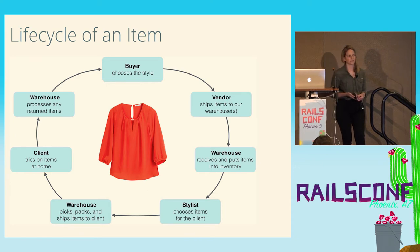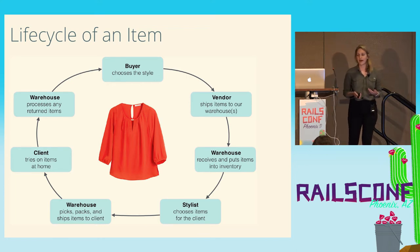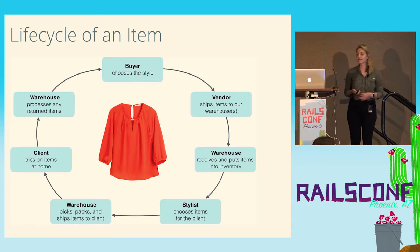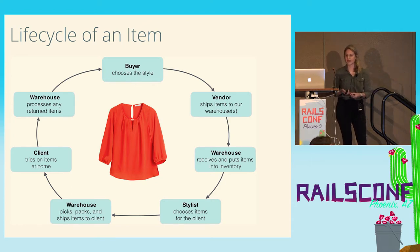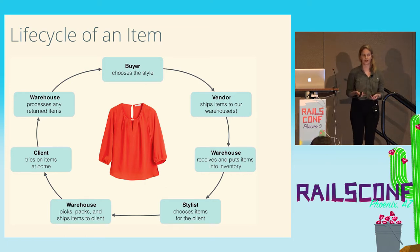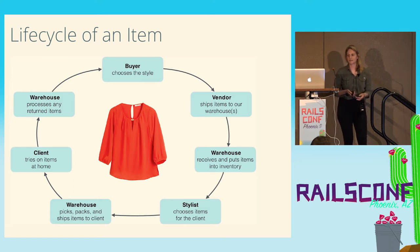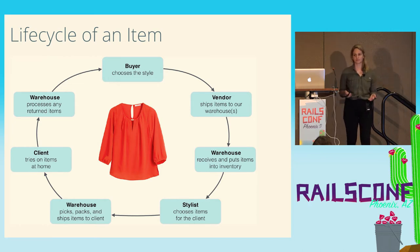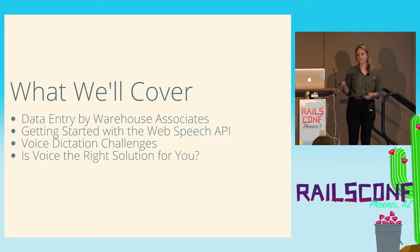Here I want to show the life cycle of one of those items in a fix. Before the item gets to the client, there are several different steps it goes through. At the very beginning, a buyer chooses to bring in the style to sell to clients. The buyer places the order for the style to come in at a certain date, and then the vendor ships the items to our warehouse. The warehouse receives and puts the items into inventory, and then they're available for the stylist to send out to the client. The warehouse picks the items out of inventory, packs them up, and ships them to the client, who can try on the items at home. The warehouse processes anything the client returns.